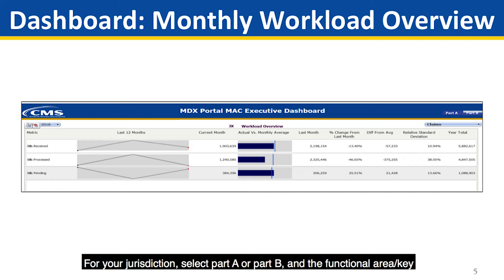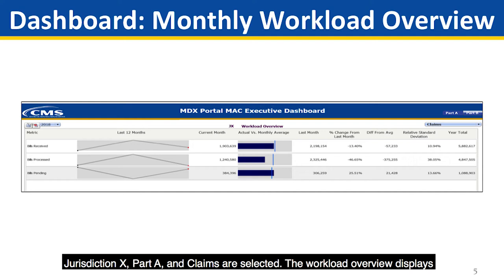Monthly Workload Overview provides a basic summary of workload trends over time. For your jurisdiction, select Part A or Part B and the Functional Area Key Performance Indicator that you want to view. In this example, for Jurisdiction X, Part A and Claims are selected.